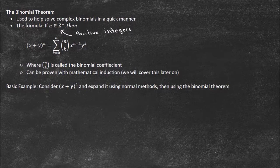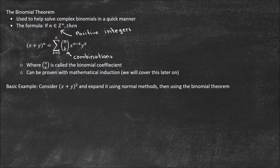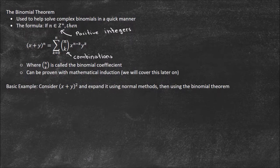...the summation from k equals 0 to n of n-choose-k — remember, this is our combination — times x to the (n minus k) times y to the k. Here, n-choose-k is called the binomial coefficient; it's the number that goes in front when you expand it out. This can be proven with mathematical induction, which we'll cover later — it's a really popular proof and a great way to understand induction.